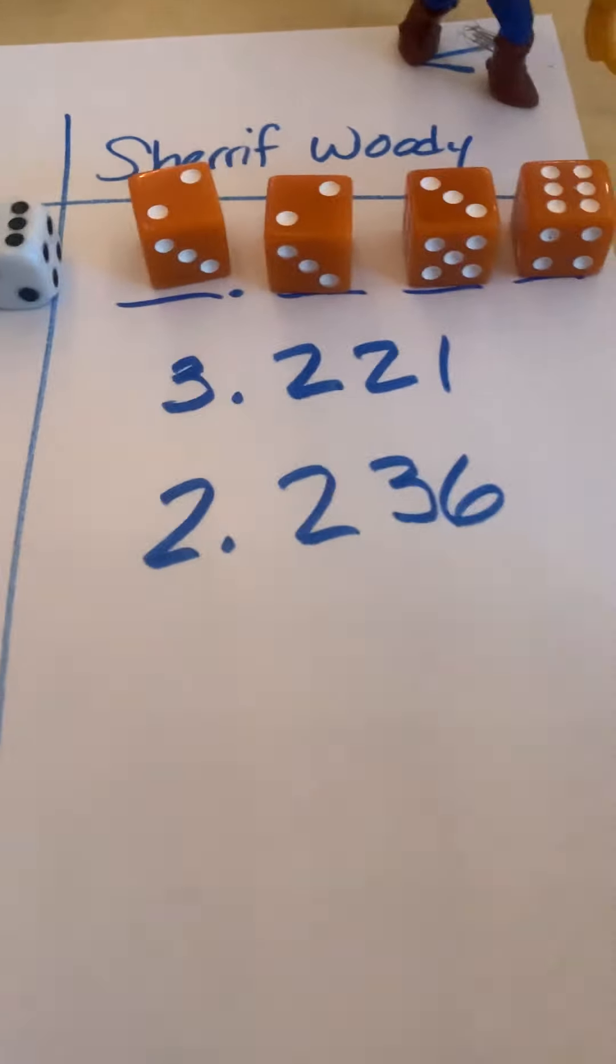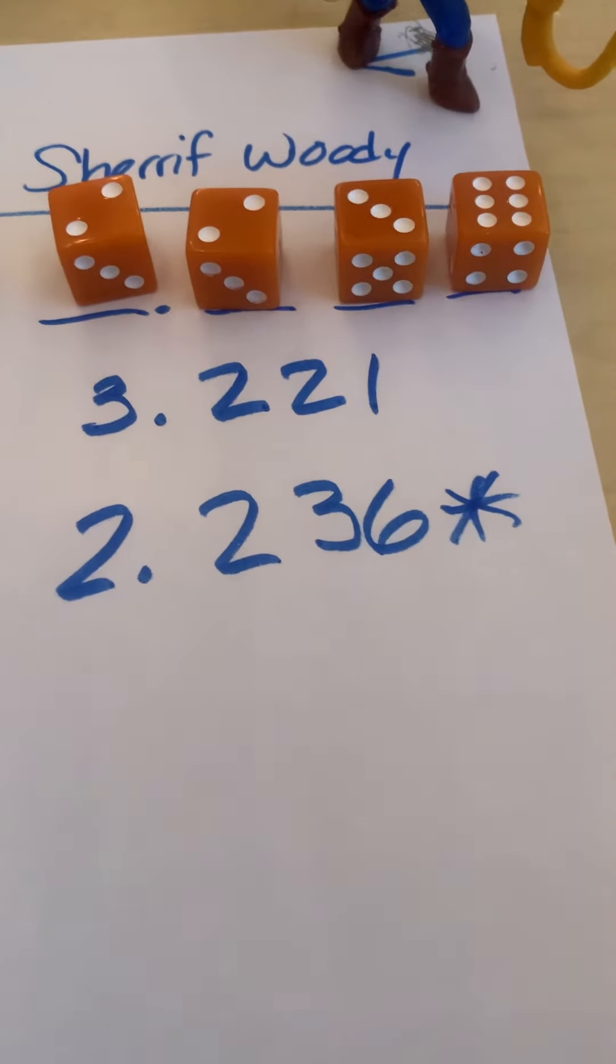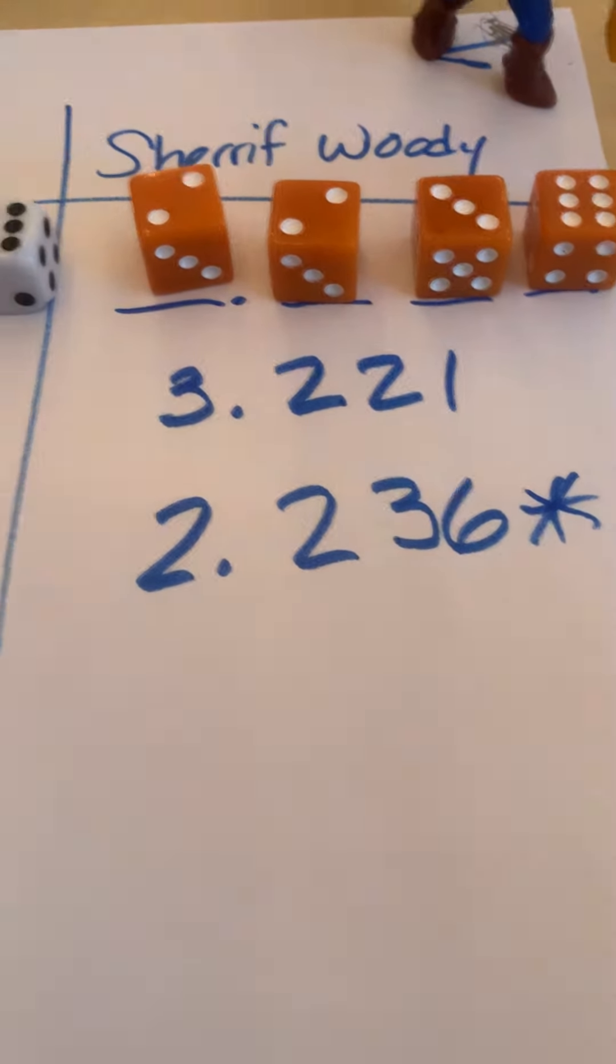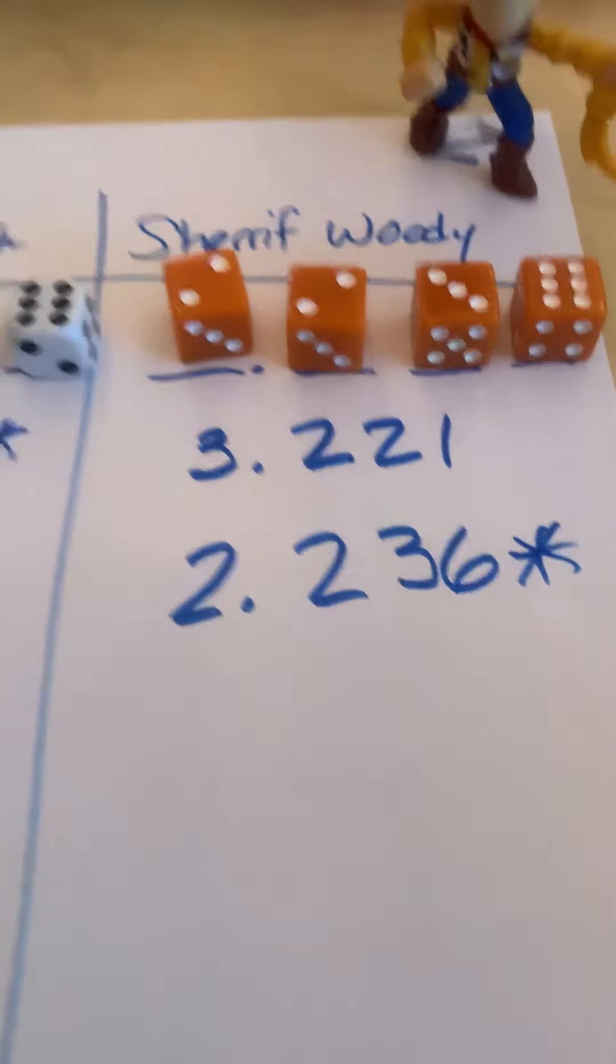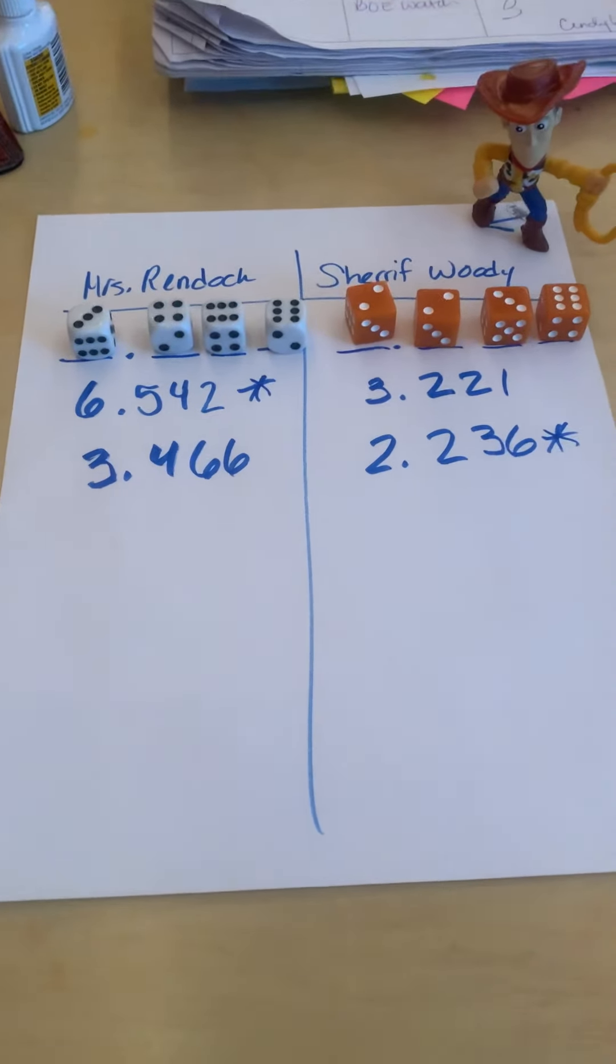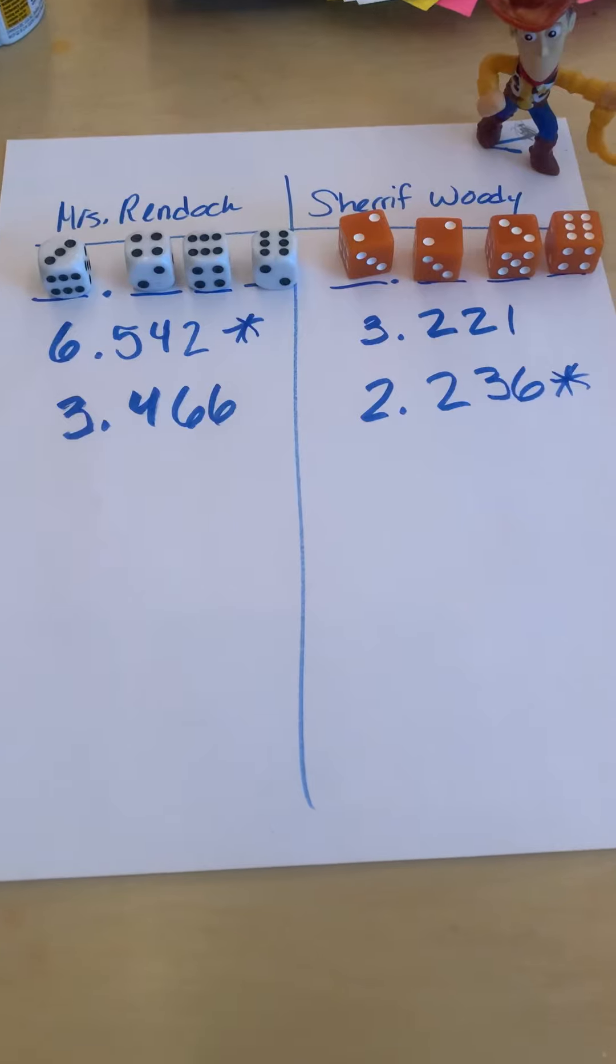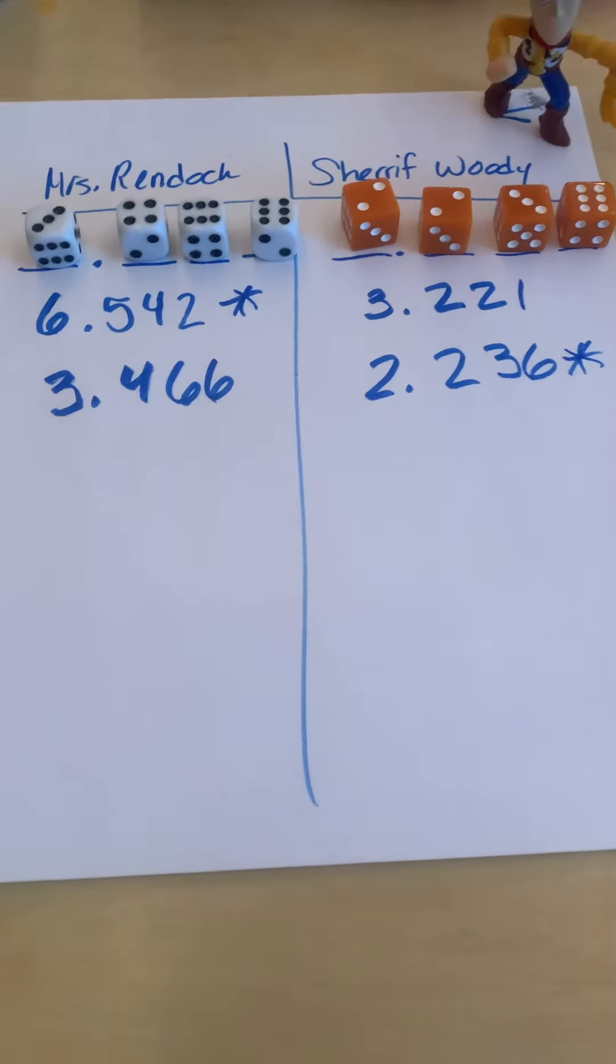You do? That's awesome. So Sheriff Woody gets the point that time, and we'll just put a star next to his decimal because that was the smallest one. So hopefully we might get a few minutes to try this in school. If not, you can try this at home. It's just a fun way to be practicing saying your decimals and talking about their place values.